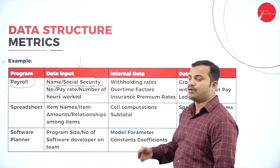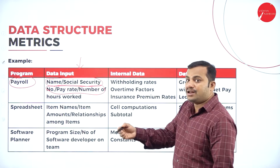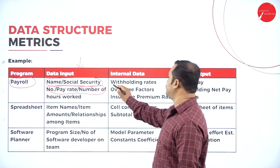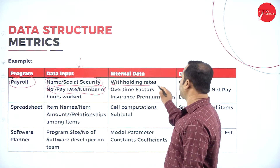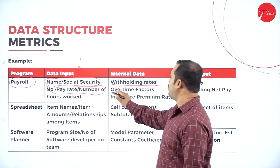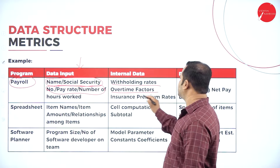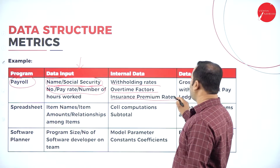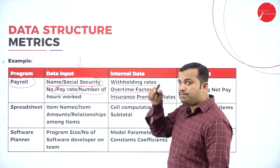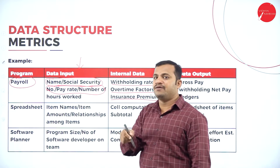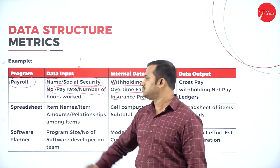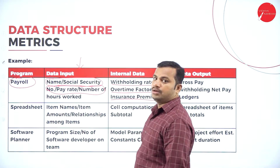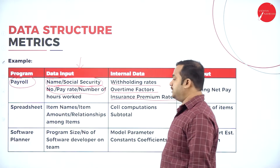Then internal data — what is the internal processing that takes place? Withholding rates, overtime factors, insurance premium rates. All these are implicit data which needs to be considered for the payroll management project.